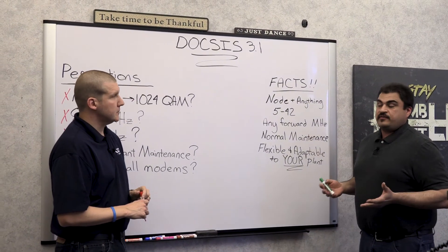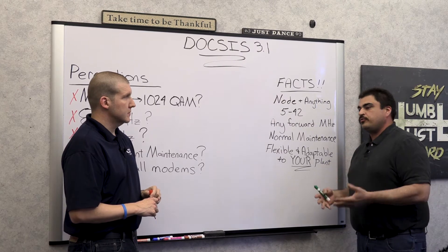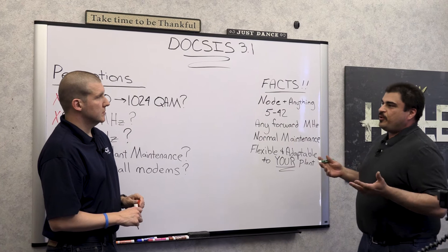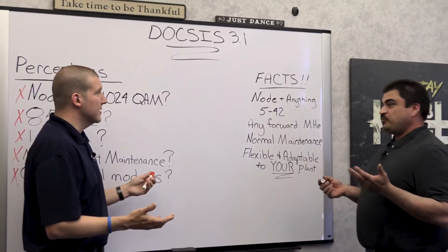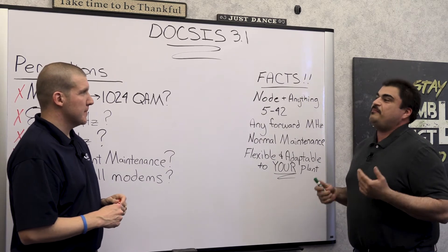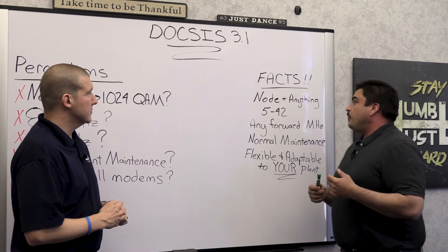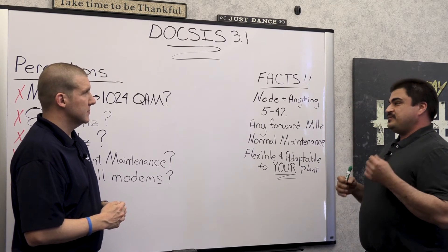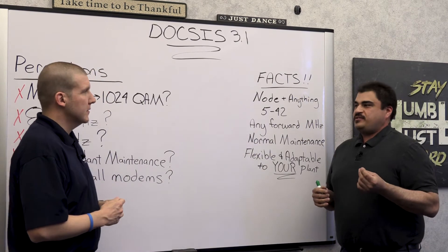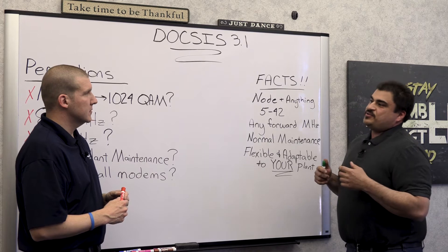A lot of the fun in this DOCSIS 3.1 adventure is that it works on literally Node plus anything. Some of the first testing we started at CCI going through 3.1 analysis was launching on architectures built as they stood today - what about Node plus 10? It sounds funny, but it's all over the place. Not everybody can afford Node plus five, and some can't architecturally make it happen without going fiber to the home. So in reality you have to keep your cascade counts - Node plus anything does work. Does it get better with a lower cascade? Absolutely. It's all about how well your plant works today and how you can make it work better tomorrow.